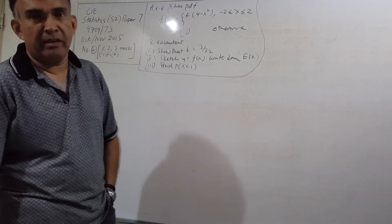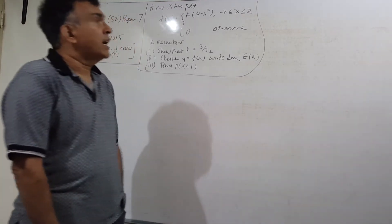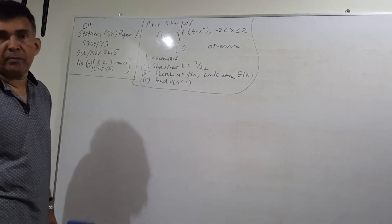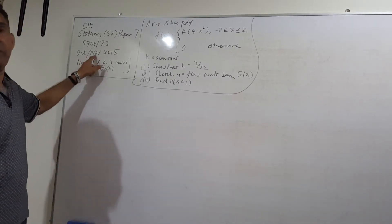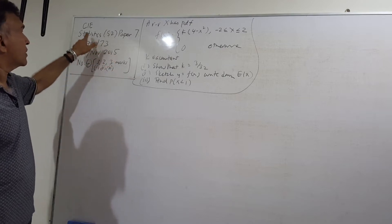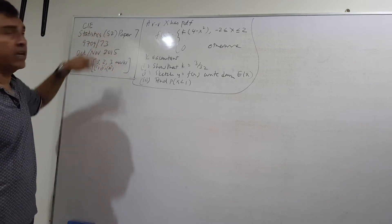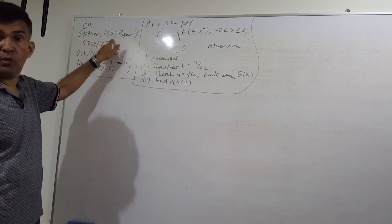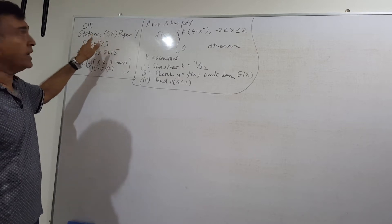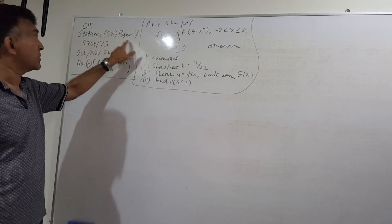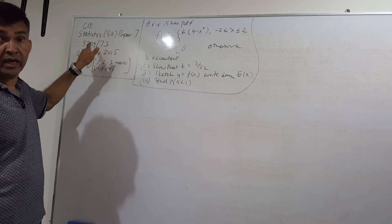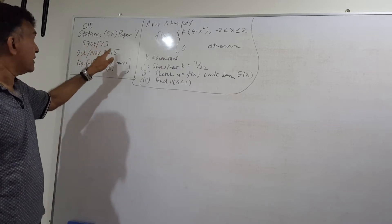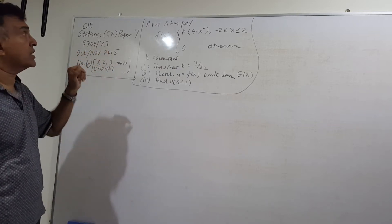Welcome to madcenter.com. In this video we are going to do a statistics problem that appeared in the October/November 2015 CIE exams — Cambridge International Exams — Statistics S2, paper 7, subject code 9709/73. This is question number 4.